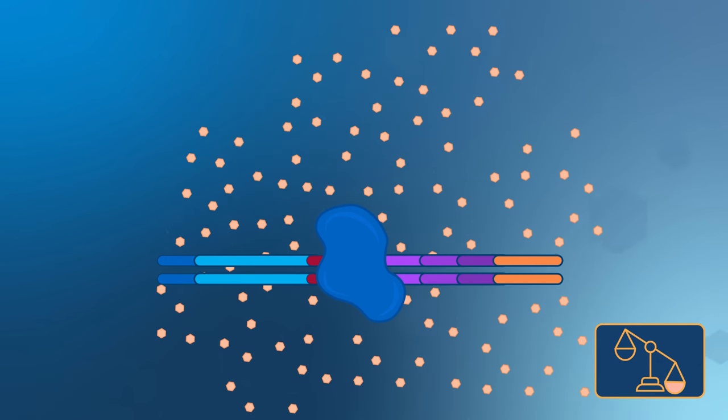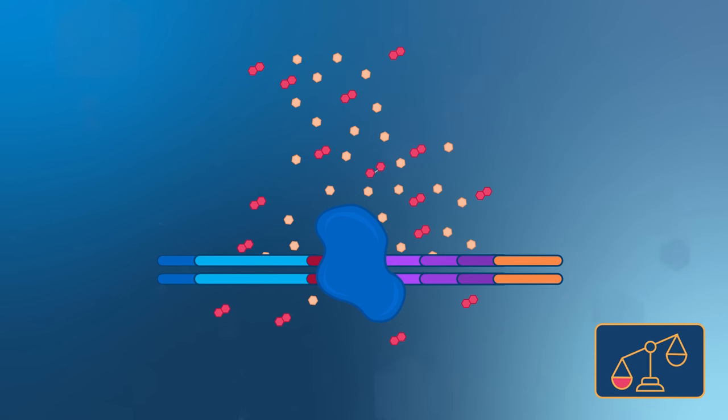This is done just before the stationary phase, so the cells will devote most of the cellular resources to producing the protein of interest rather than continuing to divide.